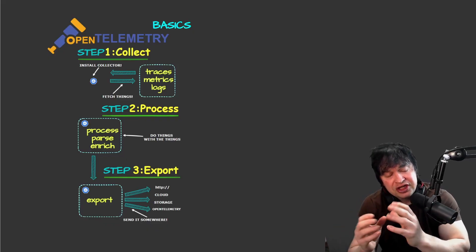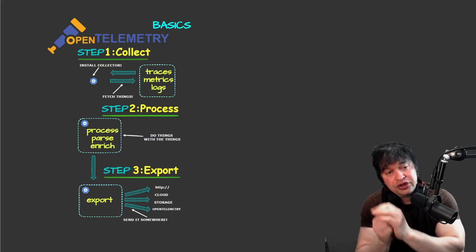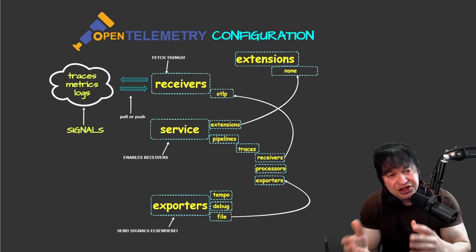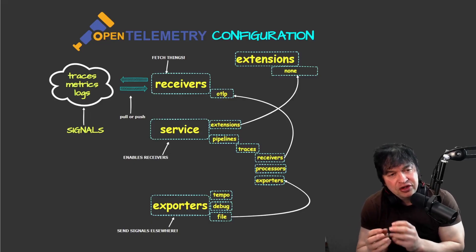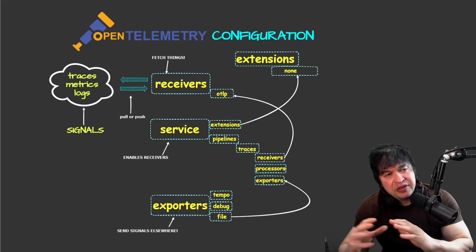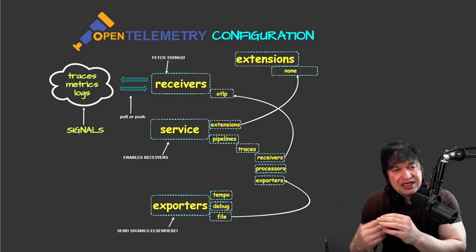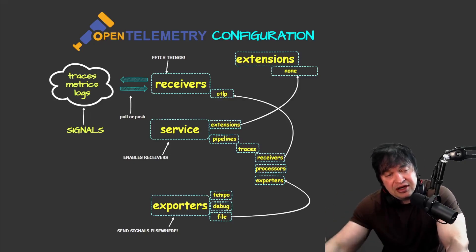OpenTelemetry can either pull data or data can be pushed to the collector, so it's very flexible. To do this we set up a configuration file and create what's called a receiver. The OpenTelemetry configuration can be really overwhelming because it uses a lot of terminology - receivers, extensions, services, pipelines, exporters, signals, baggage - and you need to get to grips with these terms.